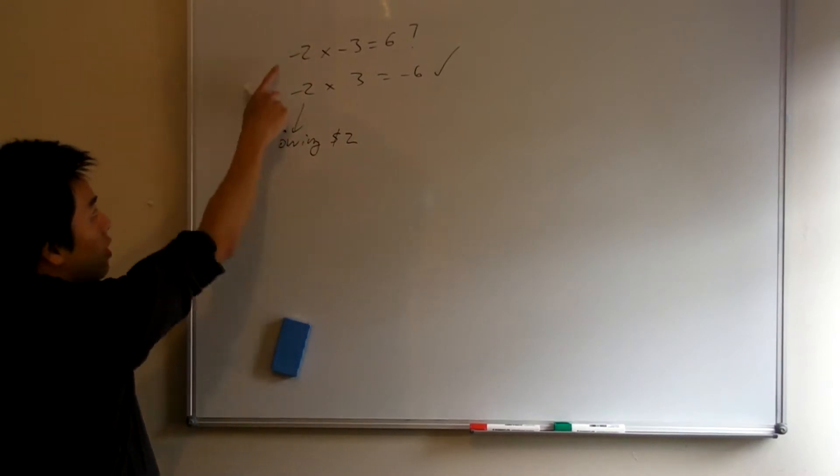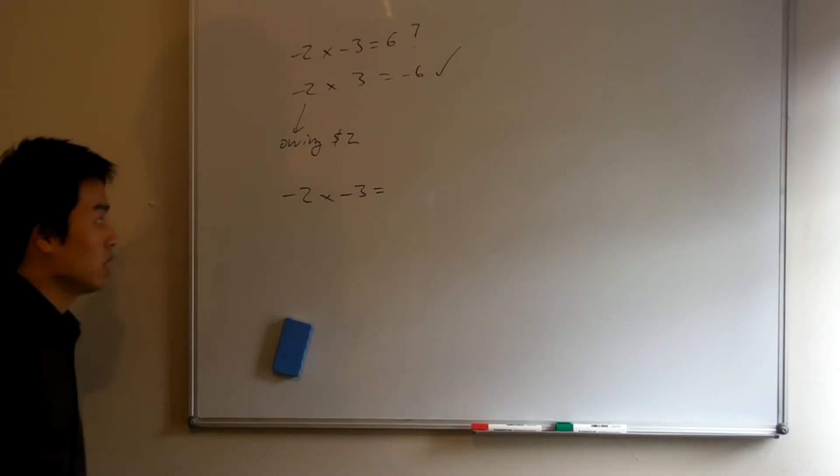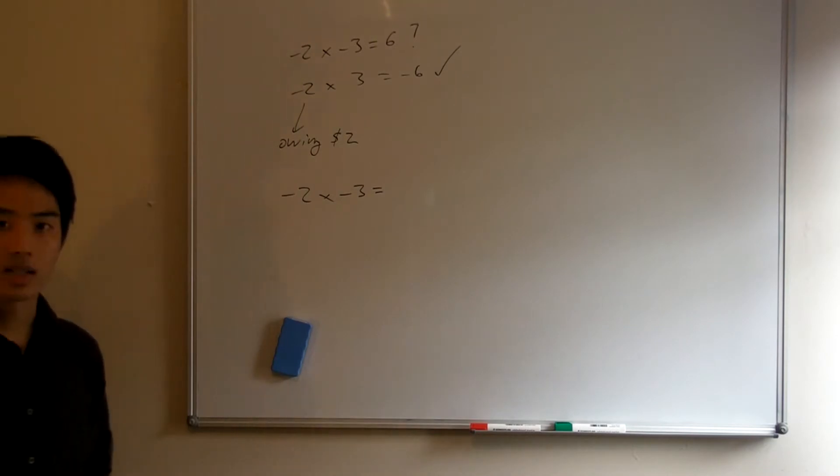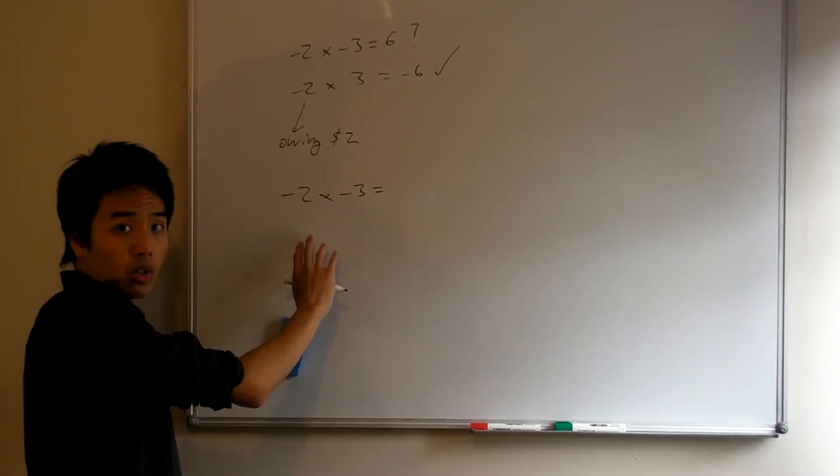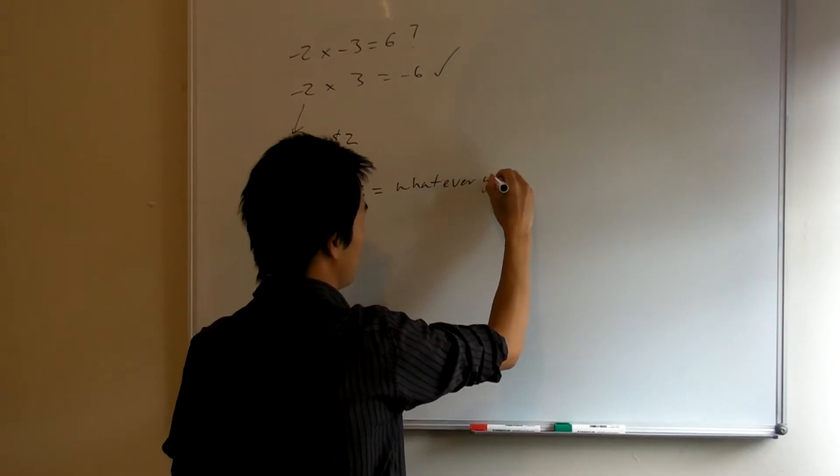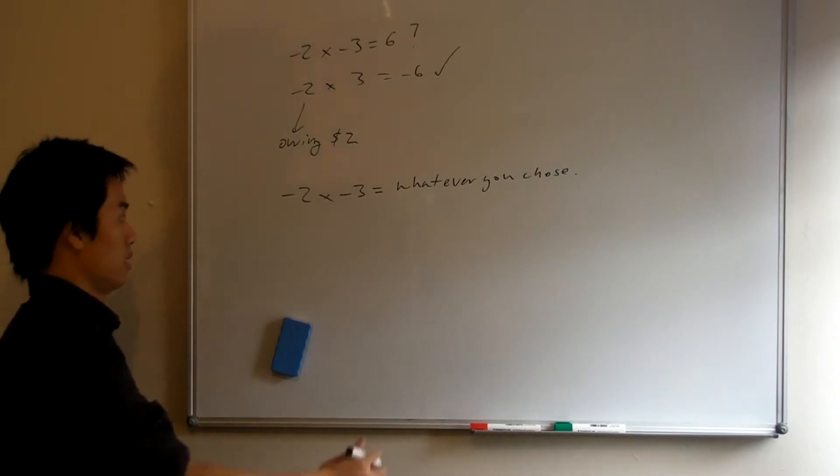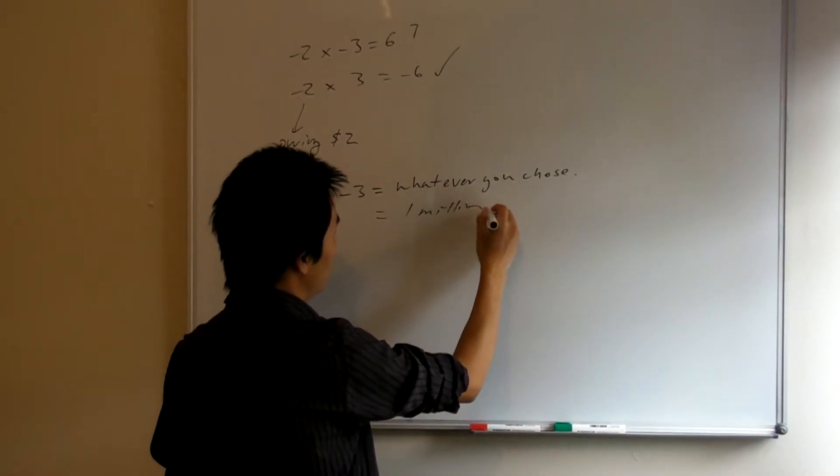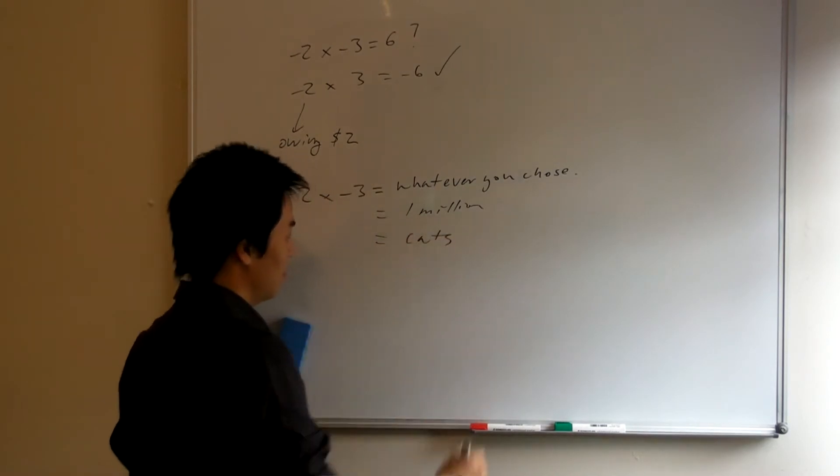So now let's go back to our original problem. Now I want you to imagine you're the very first person to actually ever consider this product. You're the person that's designing our number system. And it really is literally up to you to decide what this product should give us. So it's whatever you choose it to be. So you can go for some silly answers. You could choose this to be 1 million cats, silly answers.